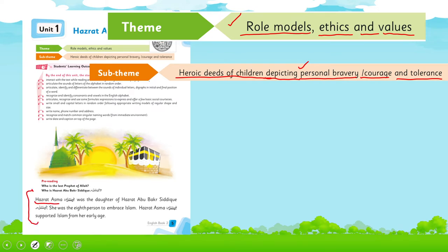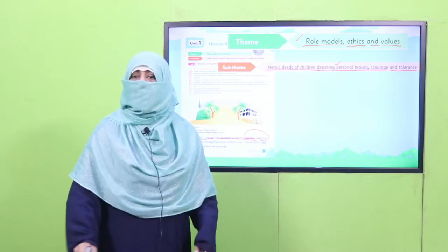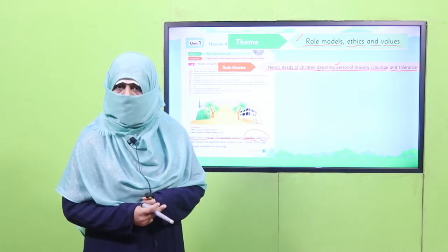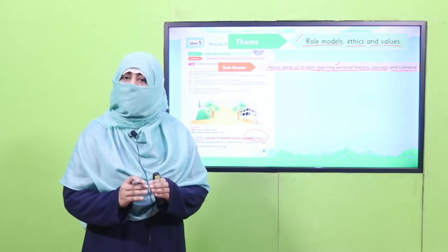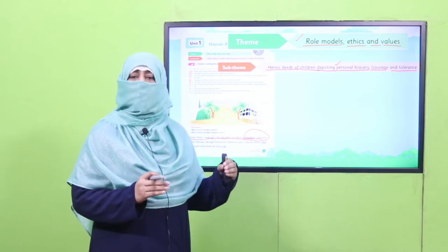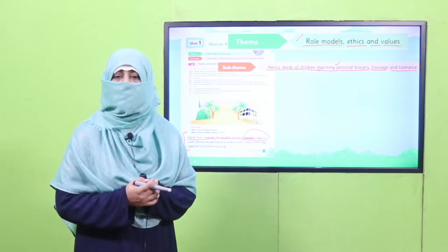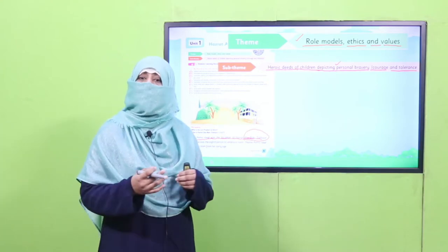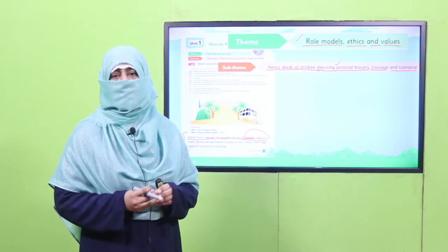حضرت اسمہ رضی اللہ تعالیٰ عنہا حضرت ابو بکر صدیق رضی اللہ عنہ کی بیٹی تھیں۔ حضرت ابو بکر صدیق نبی اکرم صلی اللہ علیہ وآلہ وسلم کے بہت قریبی دوست تھے اور مردوں میں اسلام قبول کرنے والے پہلے شخص تھے۔ انہوں نے اسلام سے پہلے اور بعد نبی اکرم صلی اللہ علیہ وآلہ وسلم کے ساتھ رہ کر اسلام کی بہت زیادہ خدمات کیں۔